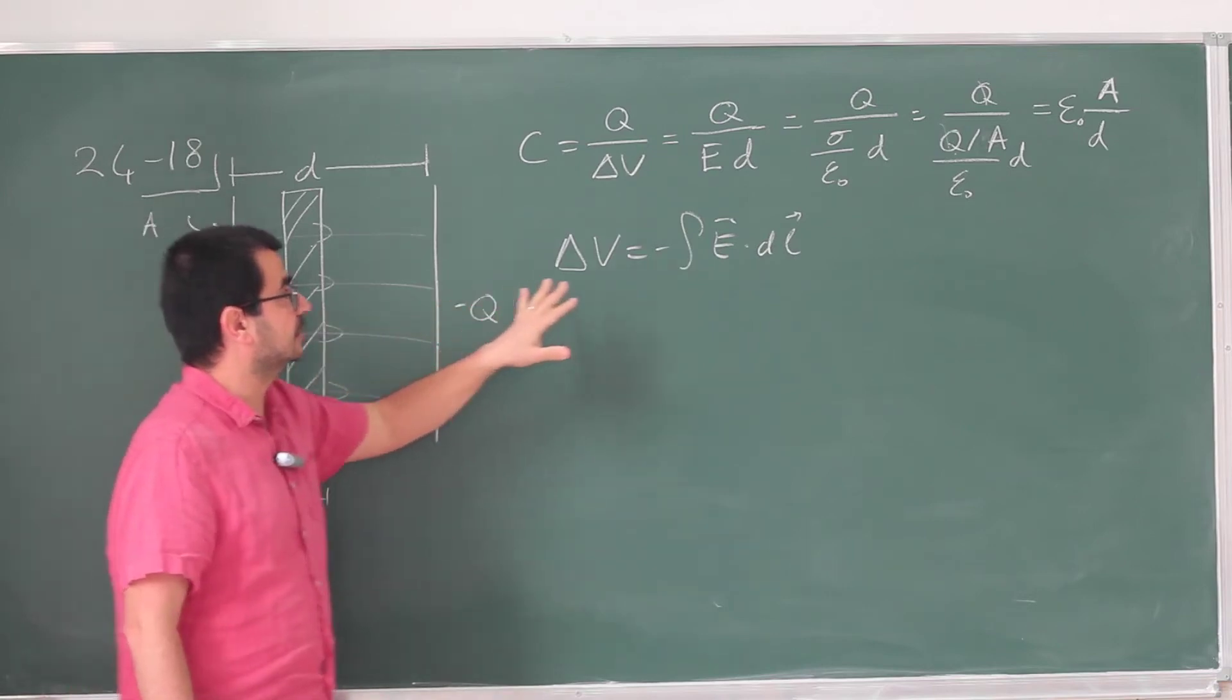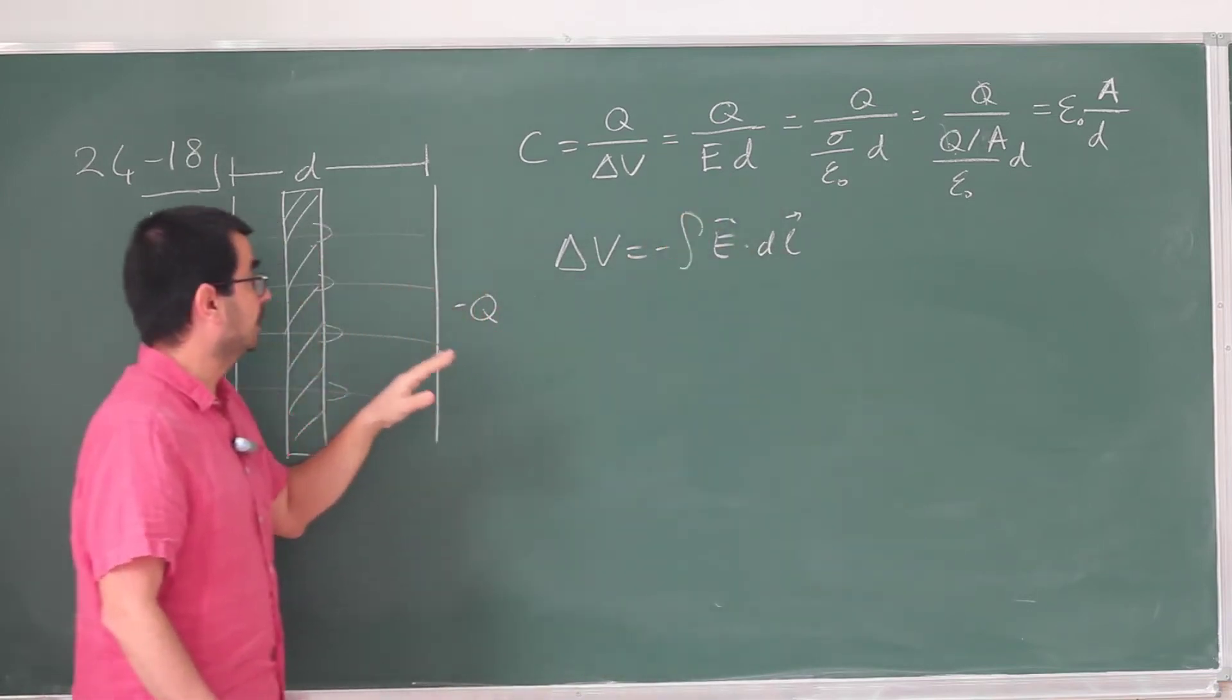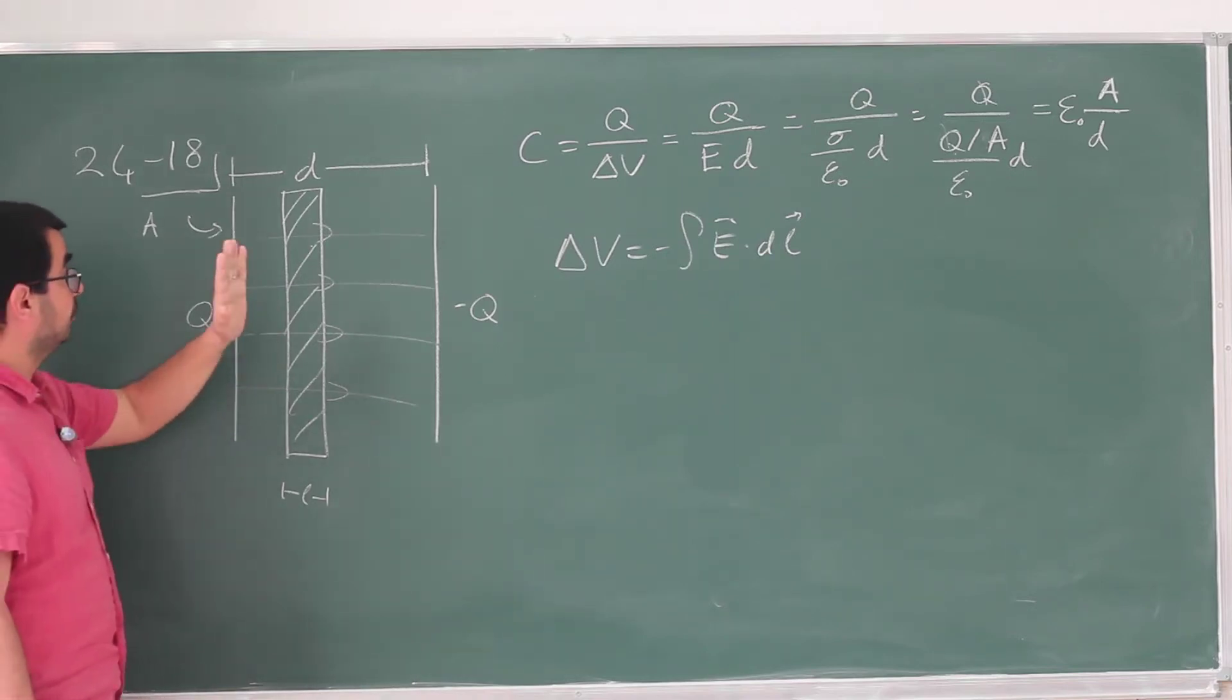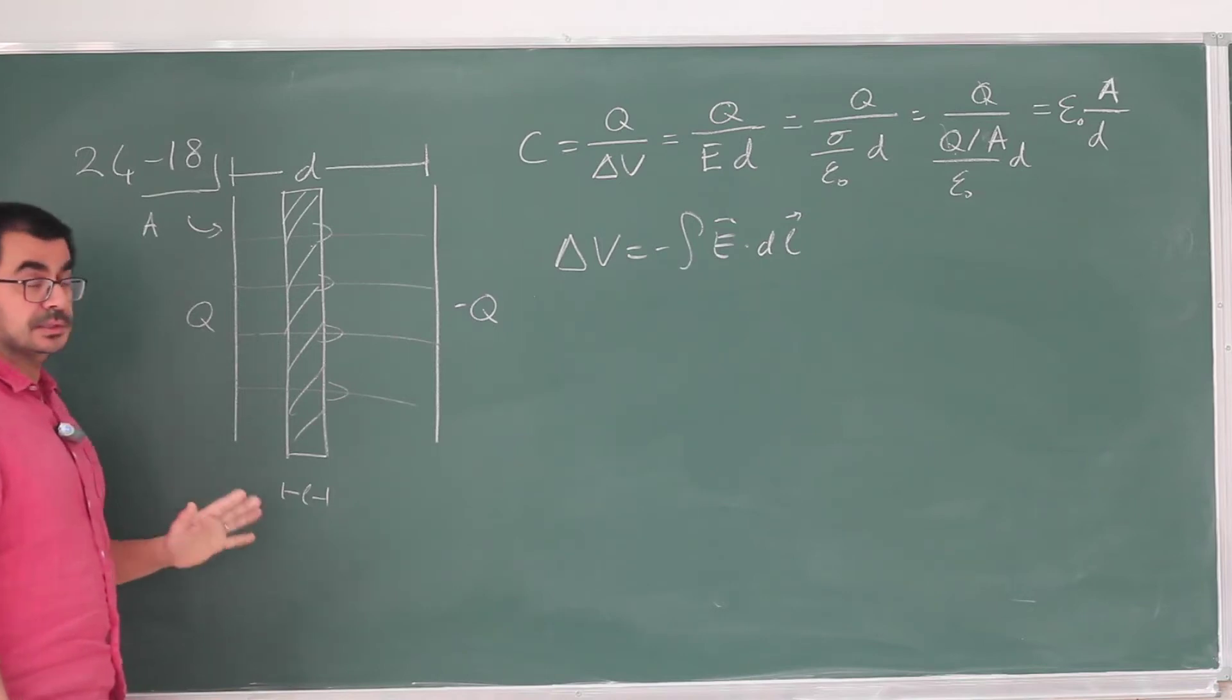So we need to take this integral from one plate to the other and calculate the potential difference. Now, here, we didn't need to take the integral because it was very simple. We could just do it directly. But here, this is going to remain the same. So what kind of electric field would you expect here? So what would happen if you introduce a conducting slab in between these two plates? That's the question.